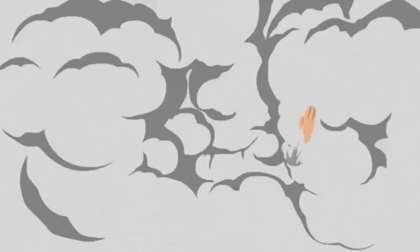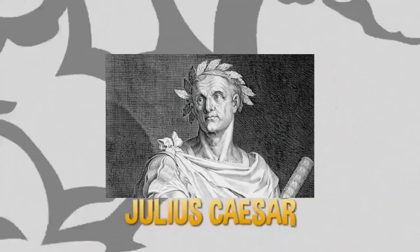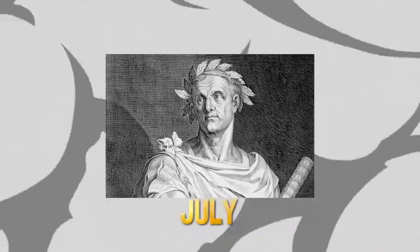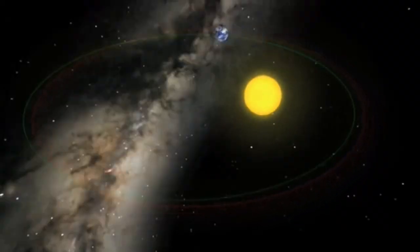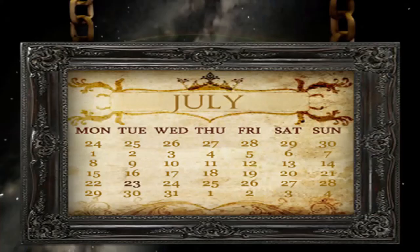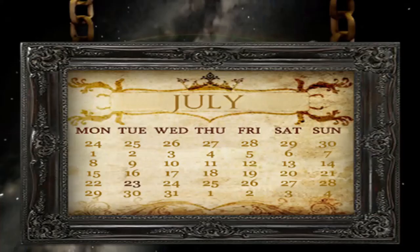Subalit nang pangalanan ni Julius Caesar ang buwan ng Hulyo hango sa kanyang pangalan, ipinasya niyang pahabain ang buwang ito at paikliin ang Pebrero na 27 na araw na lamang. Samantalang ang Hulyo ay ginawa niyang tatlong putsyam na araw.